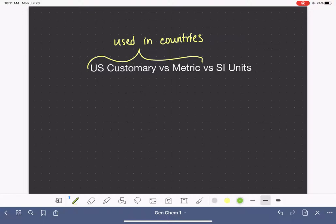The SI system of measurement, in contrast, is the system of units that is adopted by the scientific community. So this is used by scientists, and the SI system is used by scientists around the world, regardless of what country they might live in.